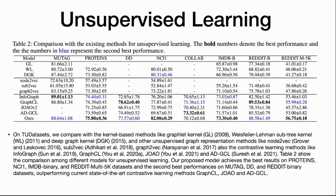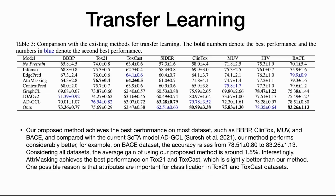Now let's talk about performance. On unsupervised learning, bold numbers represent best performance and blue numbers represent second best. We compared against graph kernel methods, unsupervised graph representation learning methods, and contrastive learning methods including GraphCL, JOAO, and ADGCL, which is the current state-of-the-art. We achieved four best and three second-best performances — pretty good for unsupervised learning. For transfer learning, following the pre-trained GNN work on chemistry datasets, comparing with GraphCL, JOAO, and ADGCL, we achieved four best and two second-best performances.